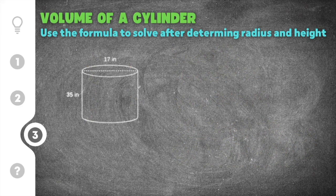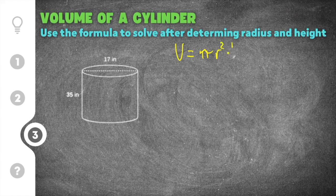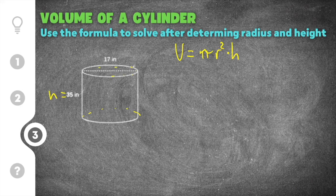Moving on to our last practice problem. This cylinder is labeled with 35 inches and 17 inches. The formula for volume of a cylinder is pi times the radius squared times the height. The height is the distance between the two bases, so height is 35 inches. However, instead of giving radius, this cylinder gives us the diameter, so we have to convert the diameter of 17 into the radius by dividing by two.